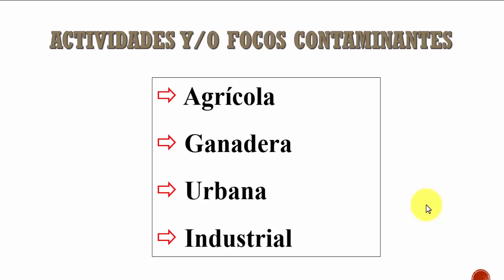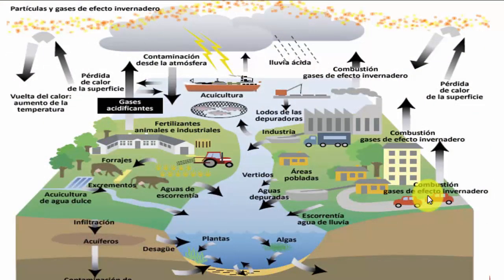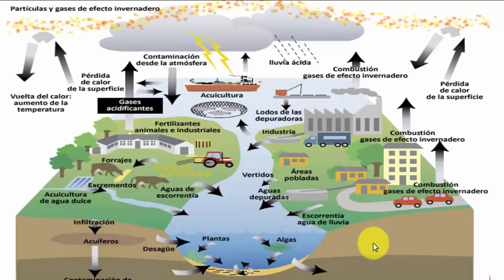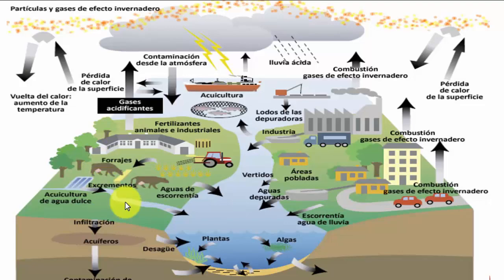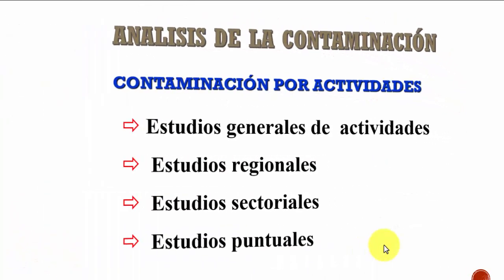Los focos contaminantes determinados son las actividades agrícolas, ganaderas, urbanas e industriales; cada una de ellas pone su granito de arena. A través de las diferentes actividades podemos contaminar las aguas superficiales y subterráneas, no solo por lo que lanzamos directamente al suelo o al agua, sino también a través de las industrias con gases, lluvia ácida y efecto invernadero. Si no tomamos las medidas y precauciones del lugar, contaminamos estas aguas, y una vez contaminadas, descontaminarlas es muy difícil.